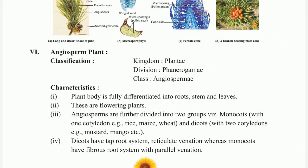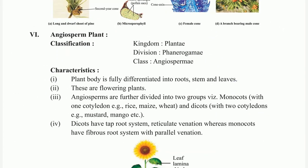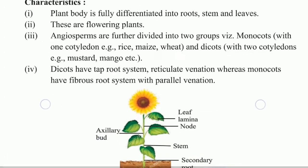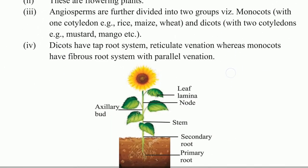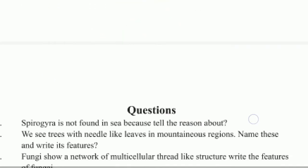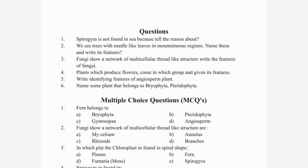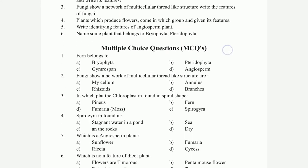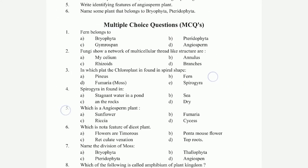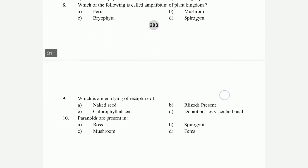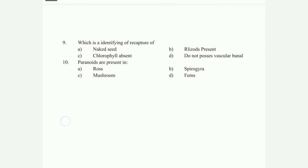Angiosperm plant: classification — kingdom, class. Characteristics include leaf, lemon node, secondary and primary root. Questions and multiple choice questions follow — questions 2 through 10.